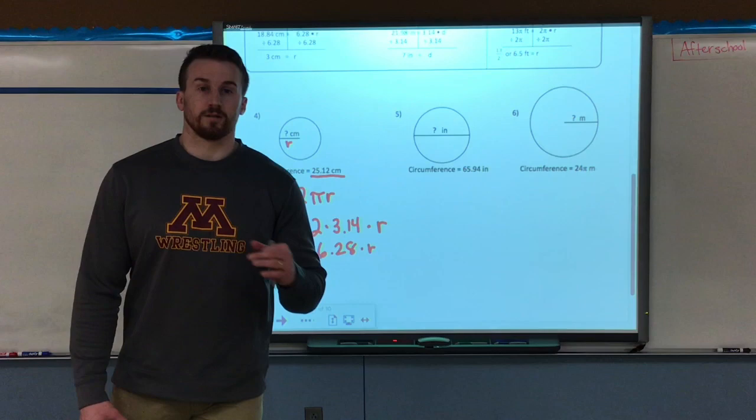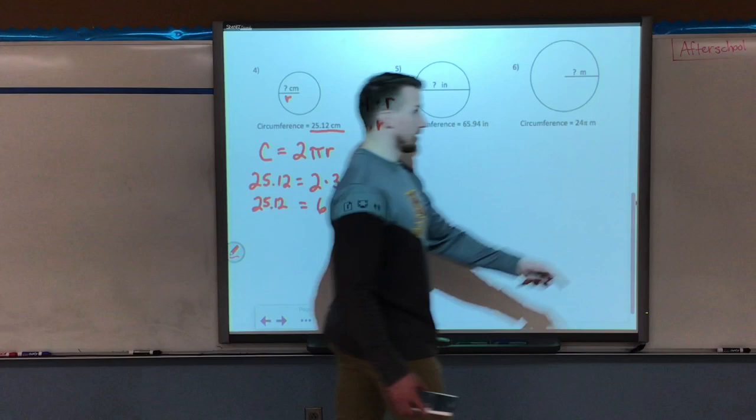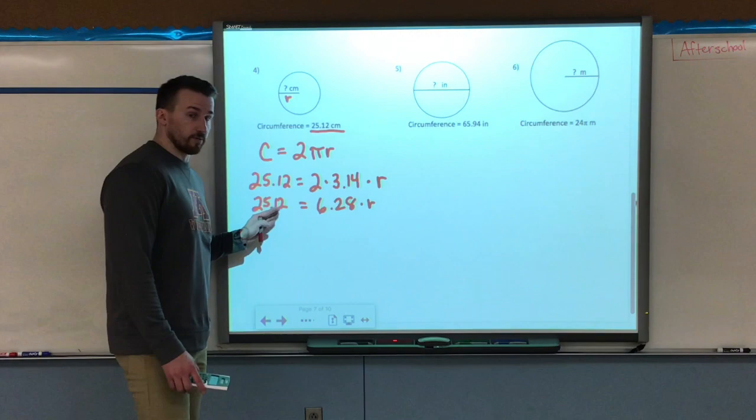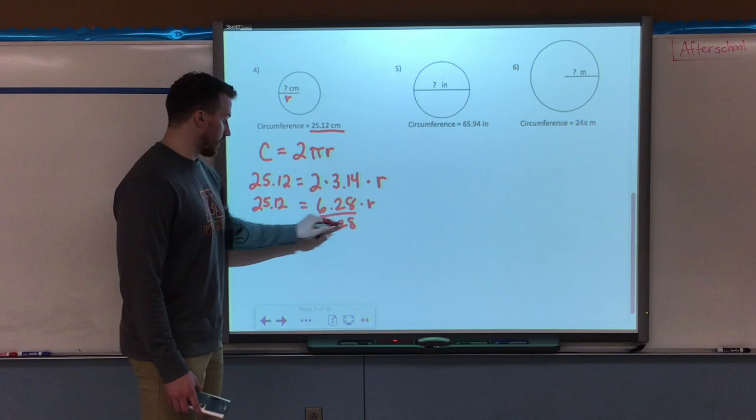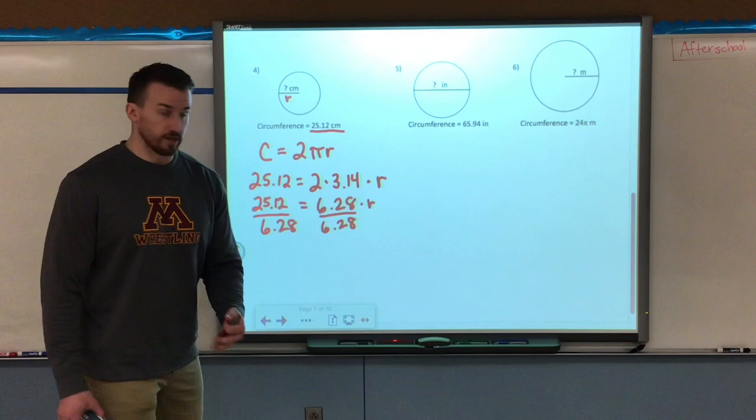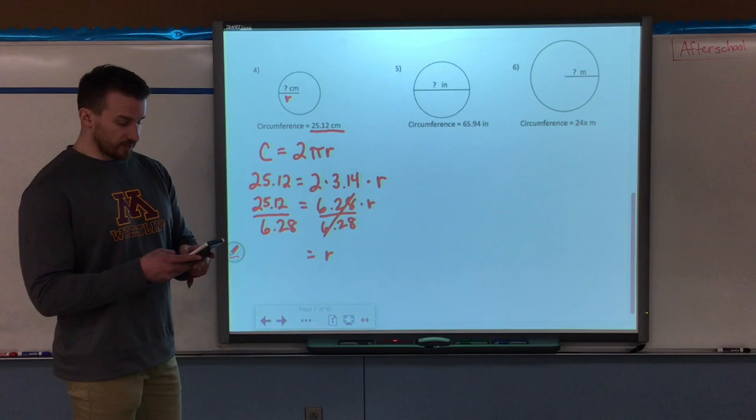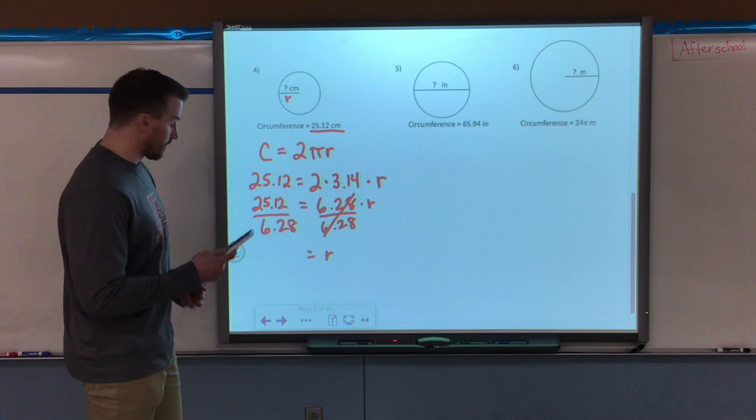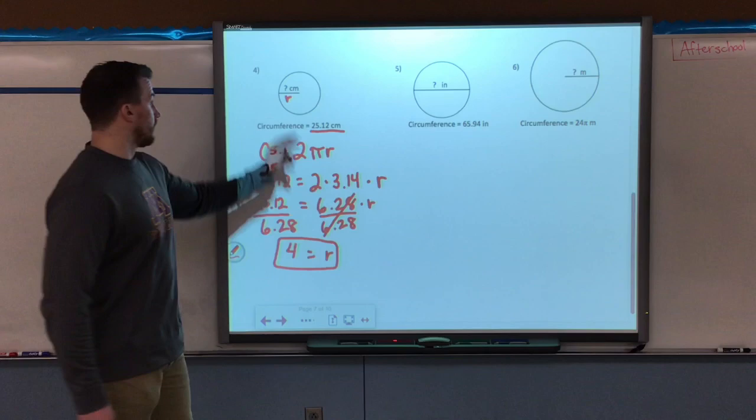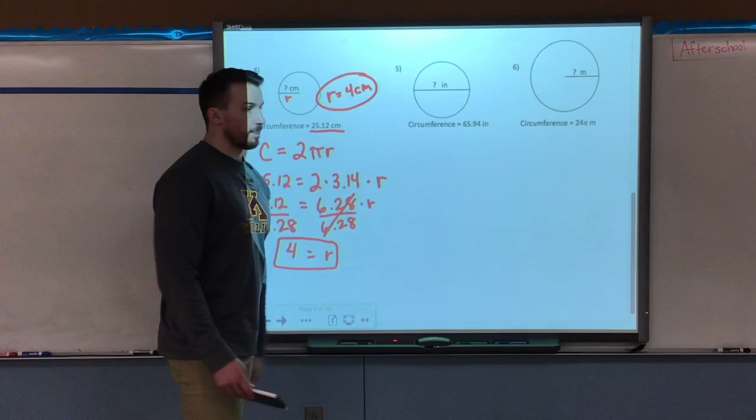Now this is like a simple one-step equation, which we've already solved back in topic 5. So if I need to multiply by a number to get this large number, I can divide both sides by 6.28, and that should give me the value of my radius, which is what we're trying to find. That'll cancel out, leaving just my radius r. If I take my circumference and divide it by 6.28, I get a radius length of 4. So my radius would be 4 centimeters.